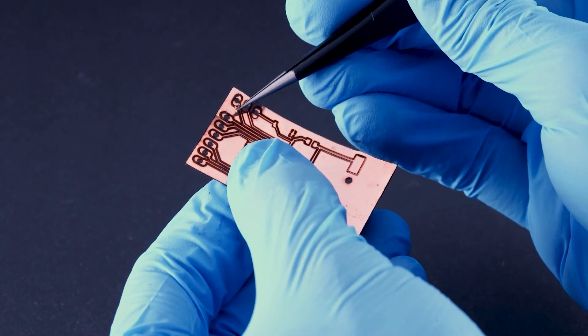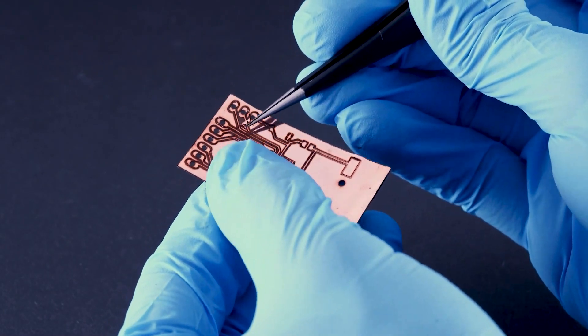Copper material at the isolation areas between conductors can be easily peeled off with a tweezer.